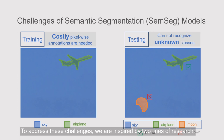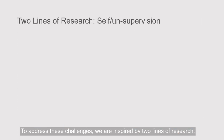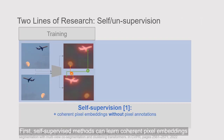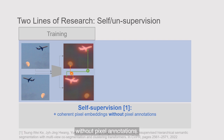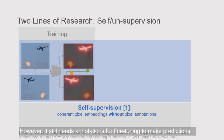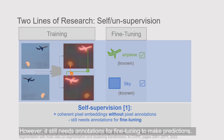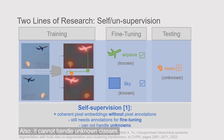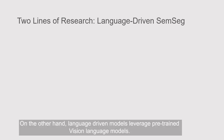To address these challenges, we are inspired by two lines of research. First, self-supervised methods can learn coherent pixel embeddings without pixel annotations. However, they still need annotations for fine-tuning to make predictions, and cannot handle unknown classes.